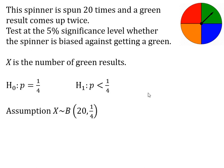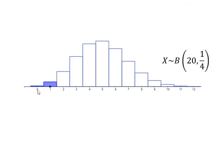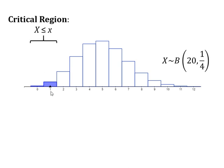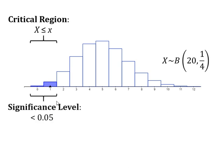We're now going to look at a graph of some results. Along the bottom I've got different possible numbers of greens that come up — it should carry on to 20 but the probabilities become too small. We're looking for very few greens to demonstrate a probability of less than a quarter, so our critical region is at the lower end. Our significance level tells us that the sum of these probabilities has to add up to less than 5%.